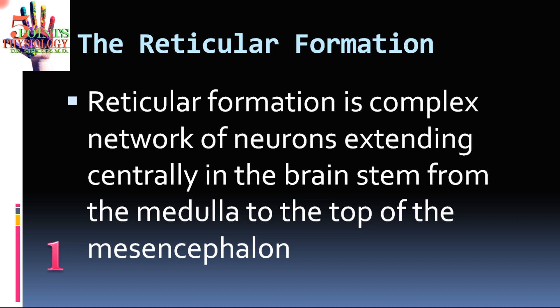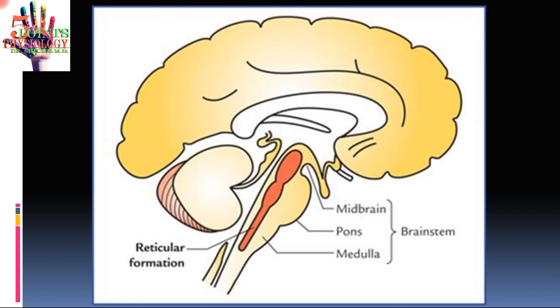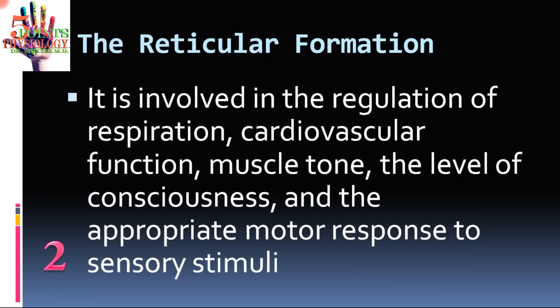First point: the reticular formation is a complex network of neurons extending centrally in the brain stem. It extends from the medulla to the top of the mesencephalon (midbrain). Looking at the diagram, the reticular formation is present centrally, extending from the medulla to the top of the midbrain.